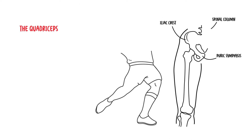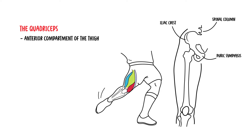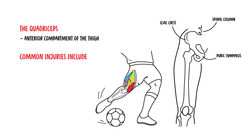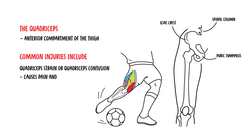The quadriceps are a group of strong muscles in the anterior compartment of the thigh. Injury to the quadriceps muscle typically occurs during sport. Common injuries include quadriceps strain or quadriceps contusion, which causes pain and reduced function of the quadriceps muscle.